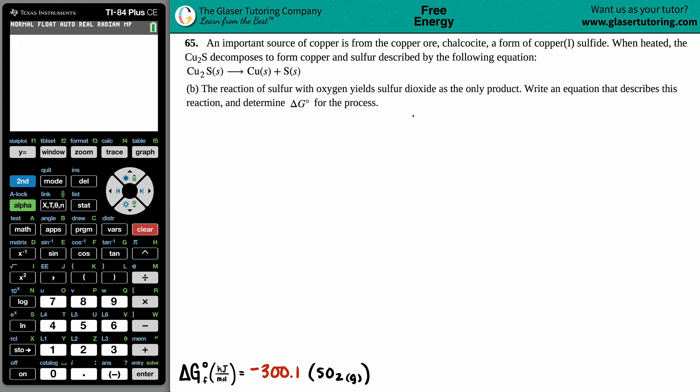Number 65. An important source of copper is from the copper ore called calcosite, which is a form of copper(I) sulfide. When heated, the Cu2S decomposes to form copper and sulfur, which is described by the following equation.